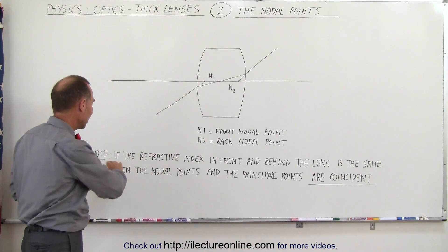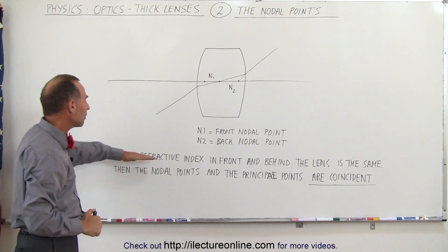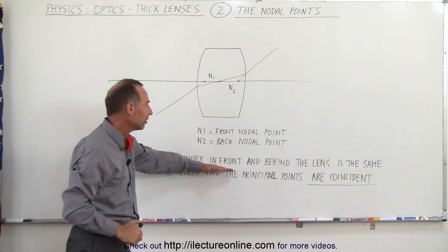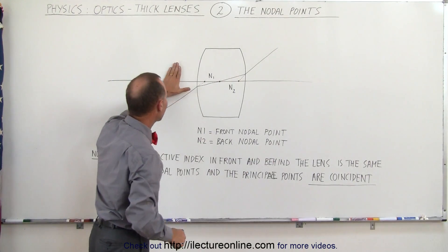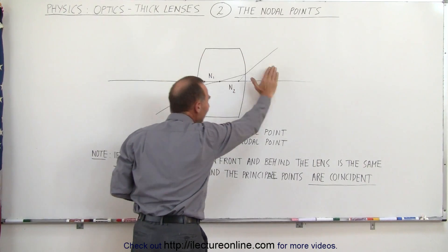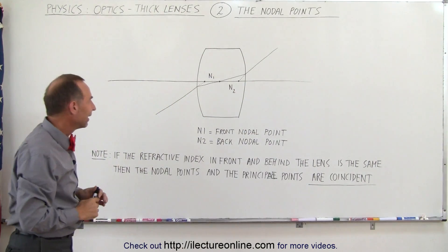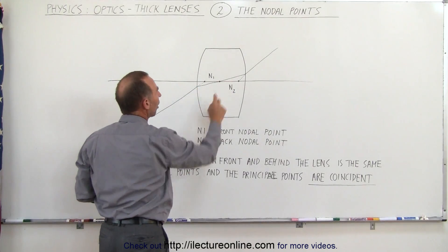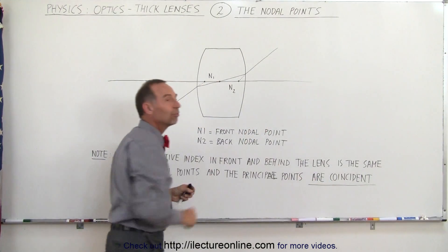If the refractive index in front and behind the lens, on this side of the lens and on this side of the lens, if the refractive index is the same on both sides, then the nodal points are coincident to the principal points.